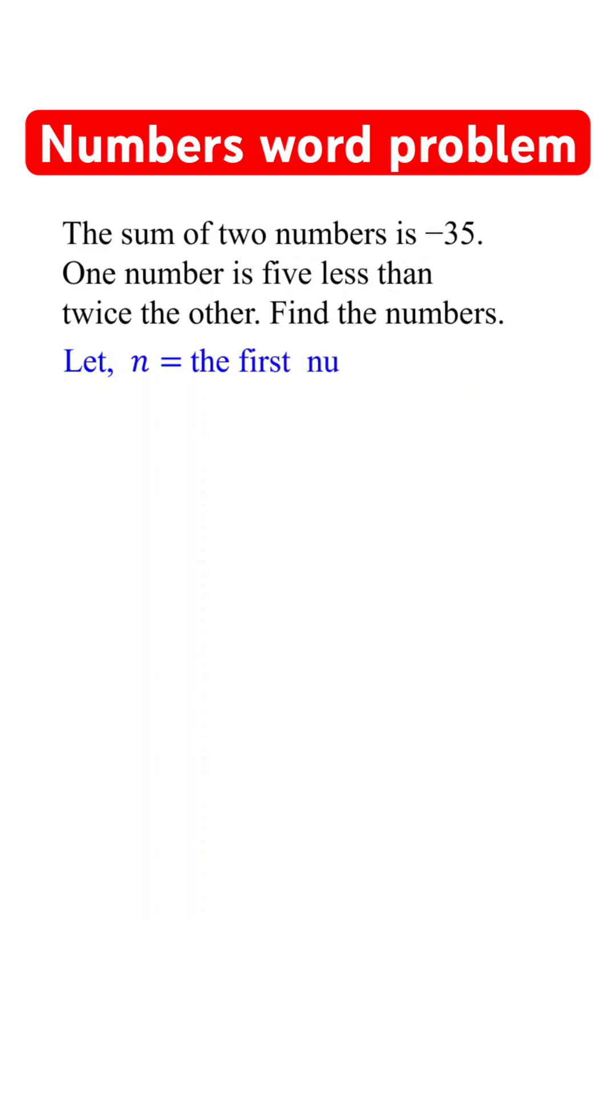Let's say n equals the first number and m equals the second number. So, the sum of two numbers translates to n plus m, which equals negative 35.